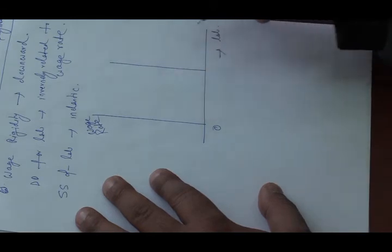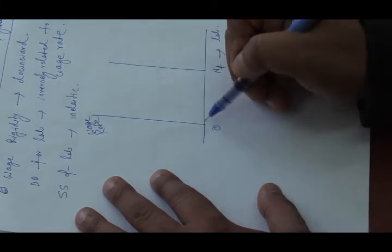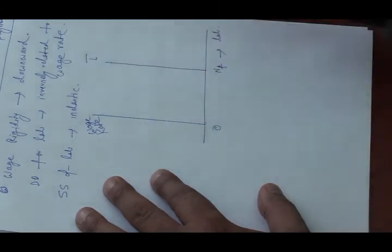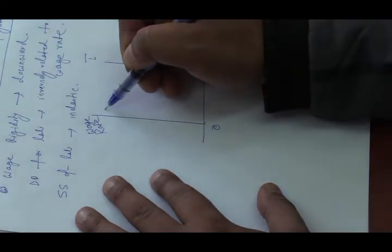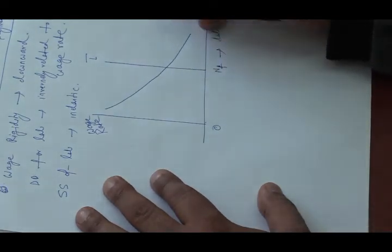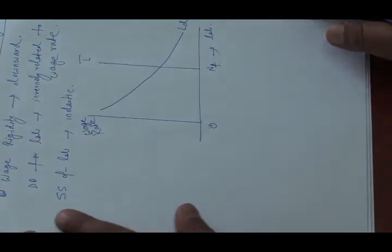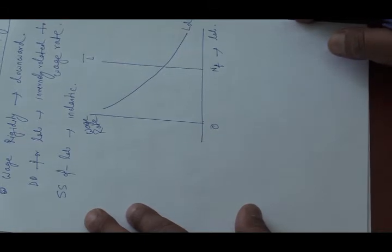This is the labour supply curve. NF is the full employment level. L bar is the labour supply curve. And LD is the labour demand curve, which represents the inverse relationship between wage rate and labour demand.